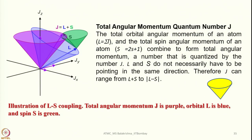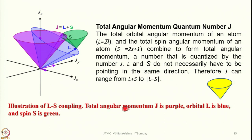Now let's look at total angular momentum quantum number J. If the electronic configuration is more than half-filled, we use J = L + S; if less than half-filled, J = L − S. The total orbital angular momentum L and total spin angular momentum S combine to form total angular momentum J. J can range from L + S to |L − S|. This diagram shows J in purple, orbital L in blue, and spin S in green, illustrating how they interact.